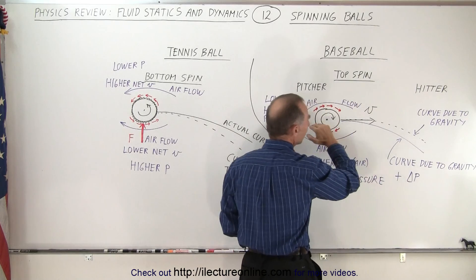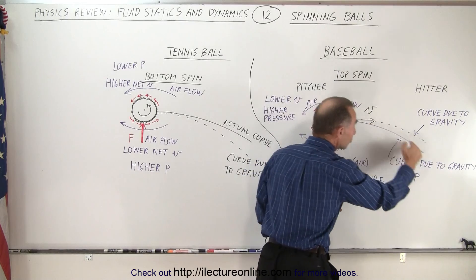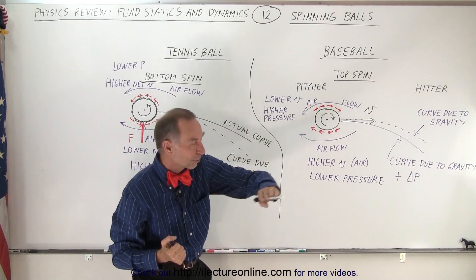But strangely enough, this is what you expect the ball to do—the ball will actually drop more quickly. The hitter trying to hit the ball tries to predict how the ball is going to move.